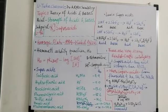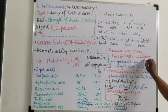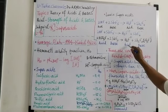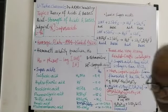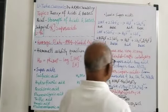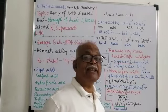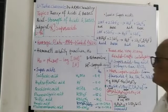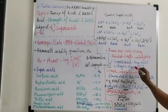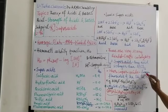So these are very strong Friedel-Crafts catalysts. So super acid, we can define in general in another way, as any acid stronger than AlCl3. So AlCl3 is also used as a catalyst in Friedel-Crafts reactions. So any other acid stronger than AlCl3 is also regarded as super acid.